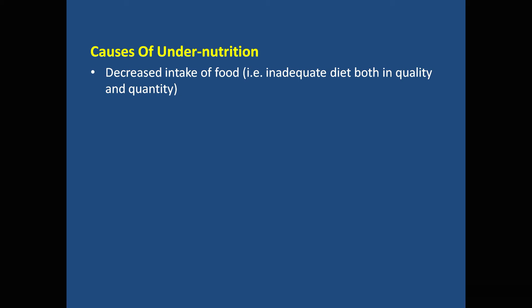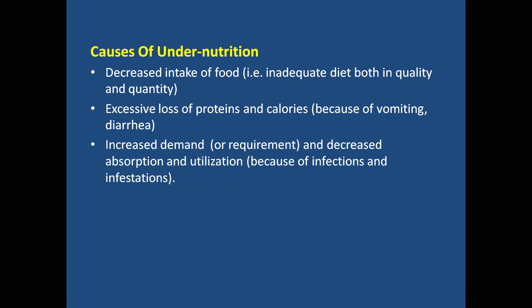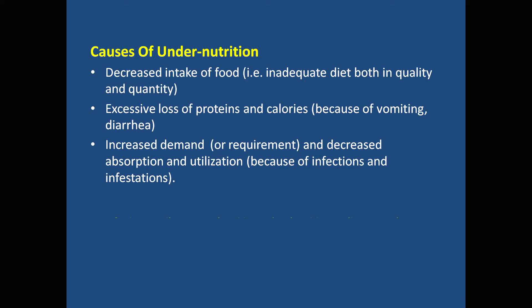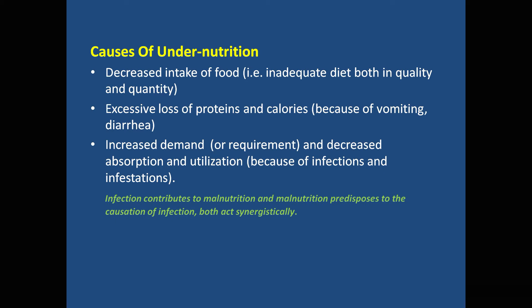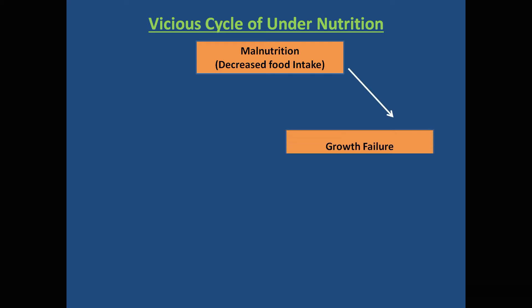Looking at the causes of under-nutrition: one cause is food intake — a person is not able to take food, either because it is poor in quality or inadequate in quantity, with insufficient proteins and calories. Another reason is increased demand or poor absorption due to infection or some other disease. Malnutrition and infection act together — malnutrition can cause infection and infection can worsen malnutrition.